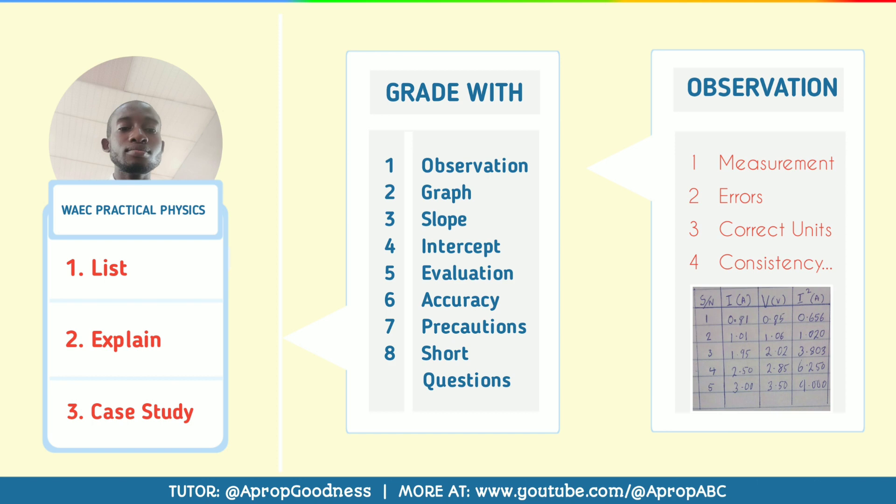The next one is evaluated measurement — that is usually three decimal places. Because you have to divide through: after you have gotten those values from your apparatus, you have to add up, divide, multiply, and all of that. If you want to get more precise values, you must put them in three decimal places so that those values will not be lost as you are evaluating them.